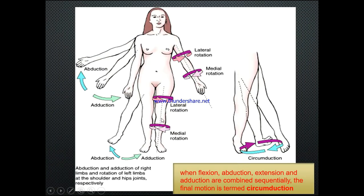We also need to consider abduction and adduction. Moving your arm away from the midline is abduction — think 'taking away.' Bringing it back toward the midline is adduction — think 'adding together.' We also talk about lateral rotation and medial rotation. Medial rotation is rotating toward the midline; lateral rotation is going the other way, rotating away. Both medial and lateral rotation, and abduction and adduction, also apply to the lower limb.